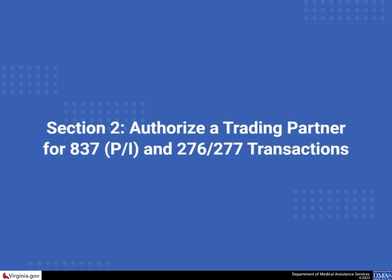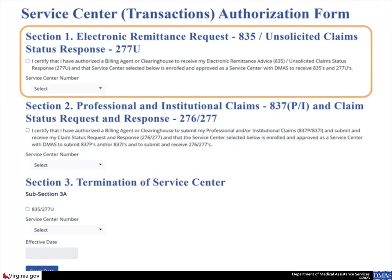This scenario shows how to authorize a trading partner for Professional and Institutional Claims, 837P and 837I, and Claim Status Request, 276 and 277 transactions. For this scenario, skip Section 1 as it is not applicable to these transaction types.